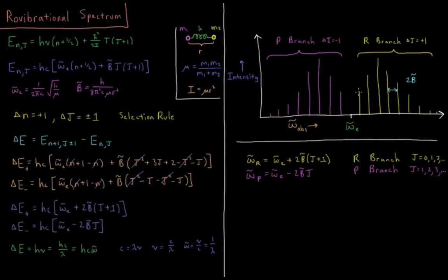So here this is a transition from j equals 0 to j equals 1, j equals 1 to j equals 2, 2 to 3, 3 to 4, 4 to 5, etc. And here we have the transition from j equals 1 to j equals 0, 2 to 1, 3 to 2, 4 to 3, etc. as we go down the P branch.